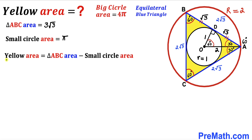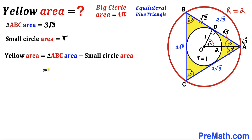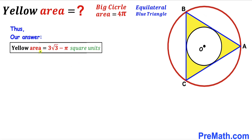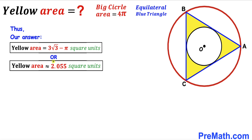In the final step, the yellow shaded region area equals the area of triangle ABC minus the area of the smaller circle: 3√3 − π. Therefore the yellow shaded region area is 3√3 − π square units, which in decimal is approximately 2.055 square units. Thanks for watching, and please don't forget to subscribe to the channel for more exciting videos!